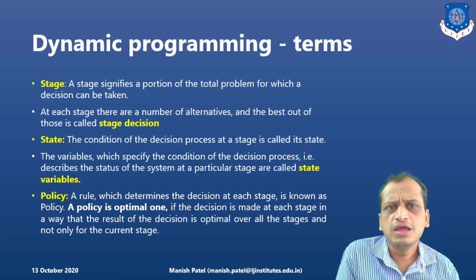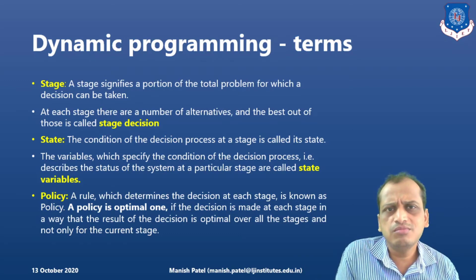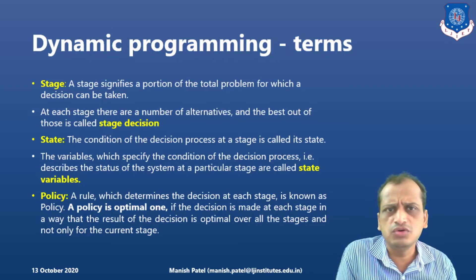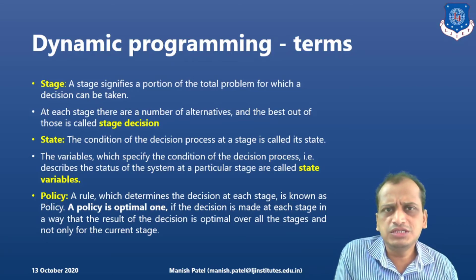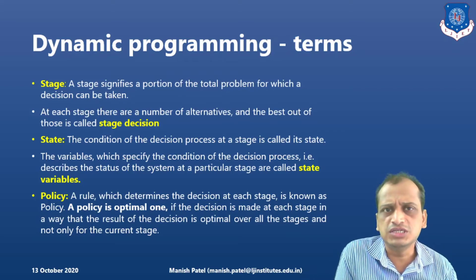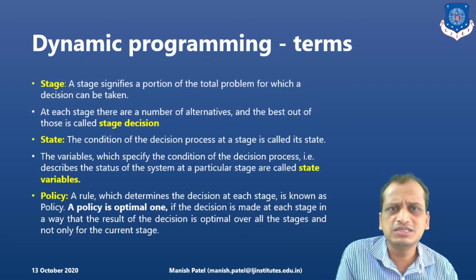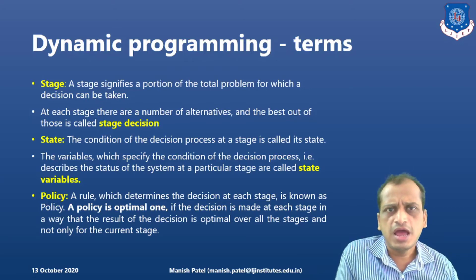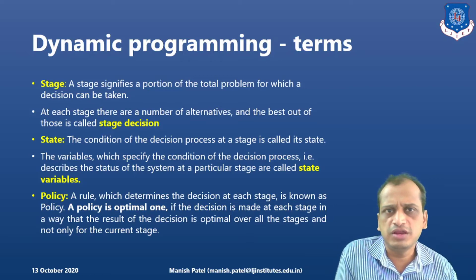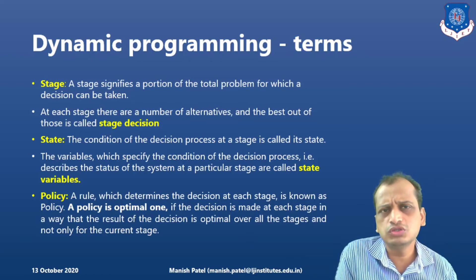Let's look into the different terms related to dynamic programming. First is stage, which is a portion of the whole problem where decisions are being made. The problem is divided into different stages, and at each stage different options are available, but the best one is called the stage decision. Talking about state, the condition of the decision-making process is called the state, and the variables that describe this condition are the state variables, which describe the status of the system at every stage.